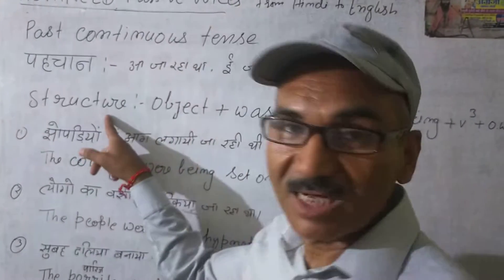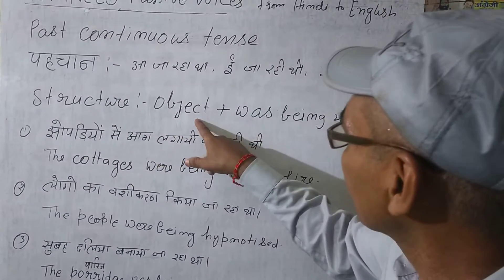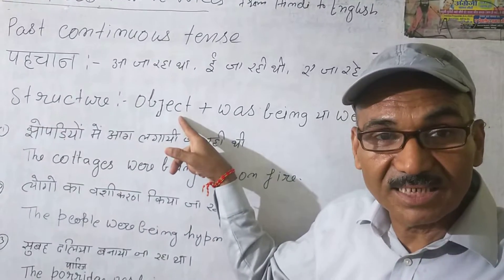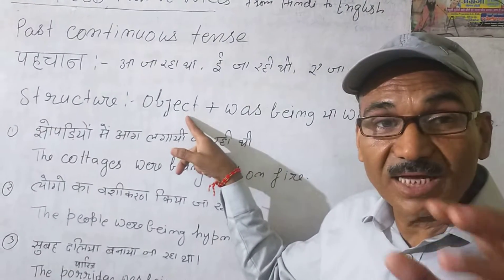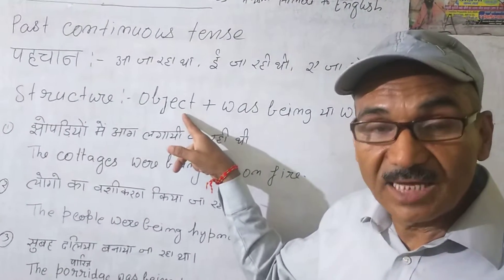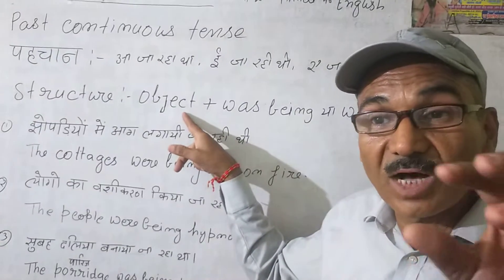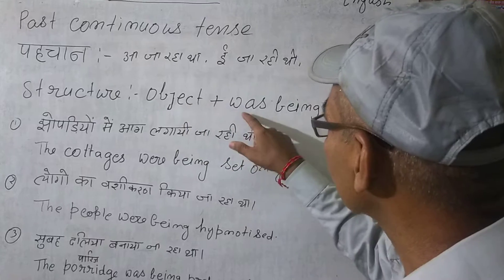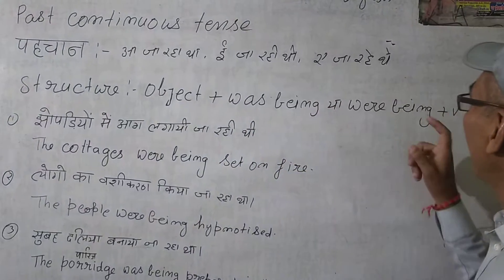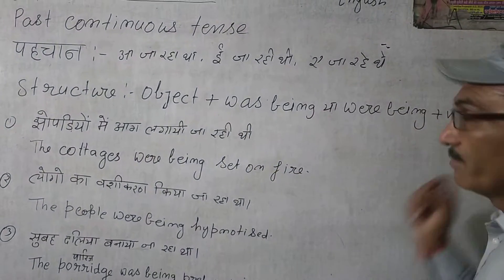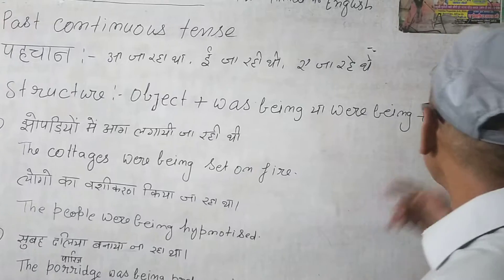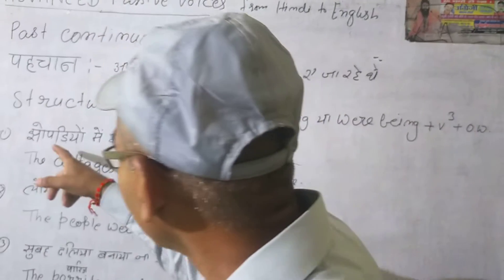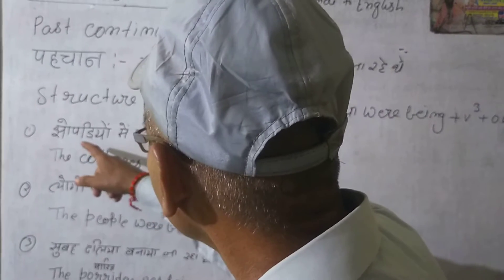Dear students, okay, so look — here is the structure. Object पहले आता है; object को subject की रूप में हम इस्तेमाल करते हैं। Focus उस पर होता है जिस पर काम किया जाता है। So: Object + was/were being + verb third form + other words.